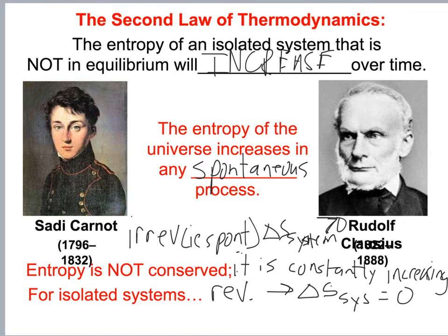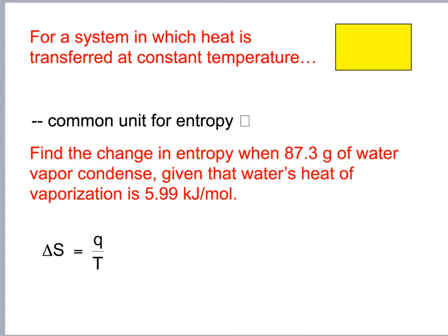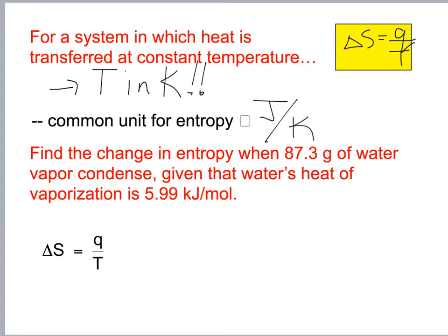Now let's talk about how heat transfer relates to entropy. For a system in which heat is transferred: delta S equals Q over T. Remember Q equals mcΔT and temperature must be in Kelvin. The common unit for entropy is joules per Kelvin.